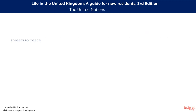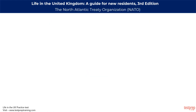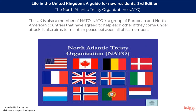The UK is part of the United Nations, an international organization with more than 190 countries as members. The UN was set up after the Second World War and aims to prevent war and promote international peace and security. There are 15 members on the UN Security Council, which recommends action when there are international crises and threats to peace. The UK is one of five permanent members of the Security Council. The UK is also a member of NATO, a group of European and North American countries that have agreed to help each other if they come under attack, and which also aims to maintain peace between all its members.